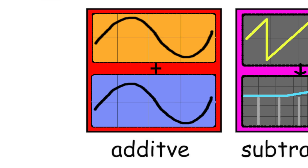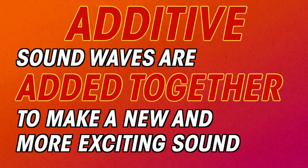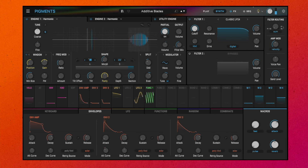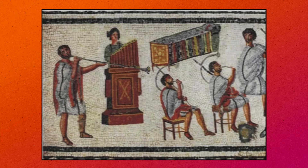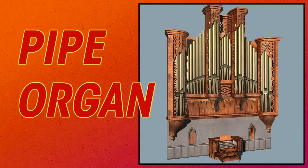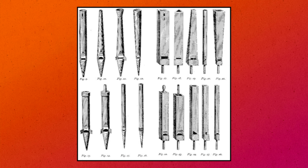Additive synthesis: sound waves are added together to make a new and more exciting sound. In my opinion, there are two distinct applications of this method. The first is so simple that the earliest examples come from before synthesizers were even invented. The pipe organ pumps pressurized air through hundreds of pipes separated into groups based on their size and material. The player controls which groups are active using something called stops.